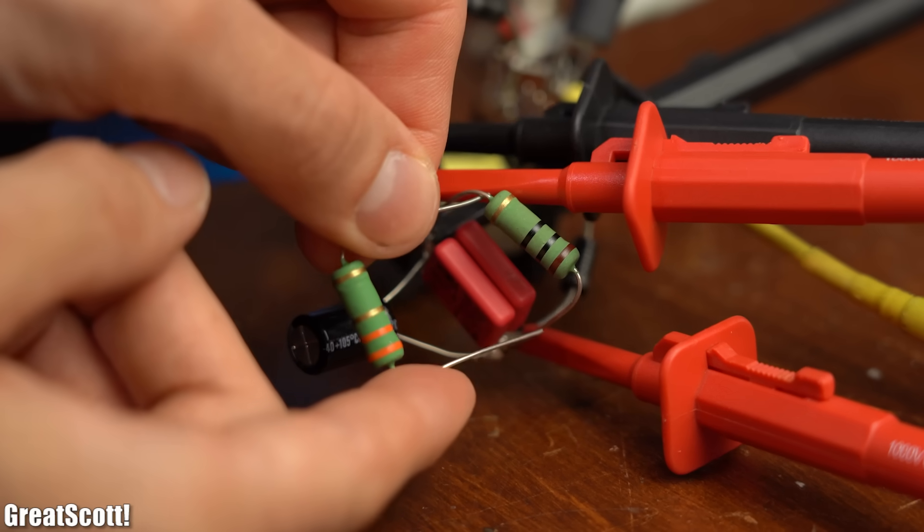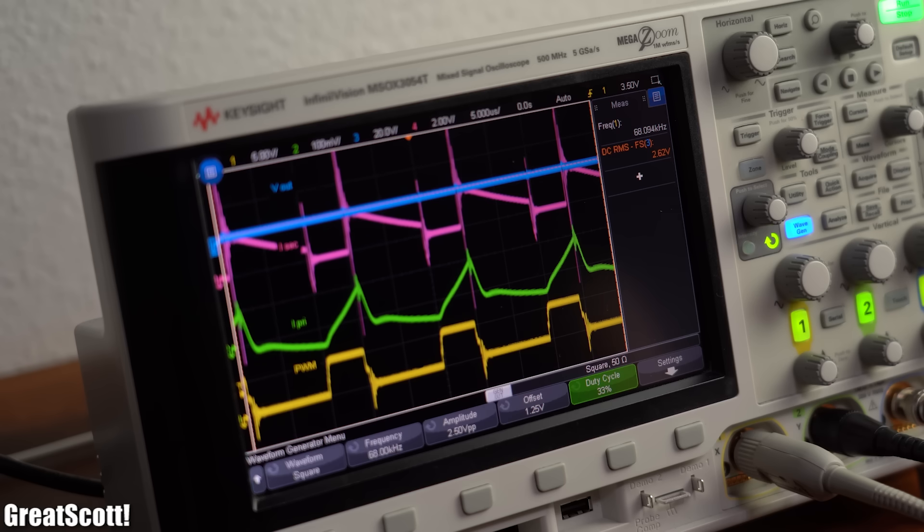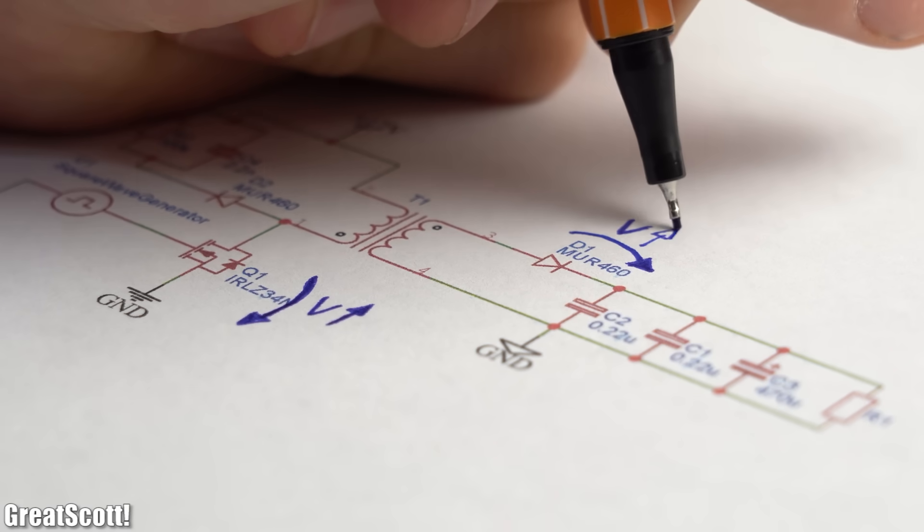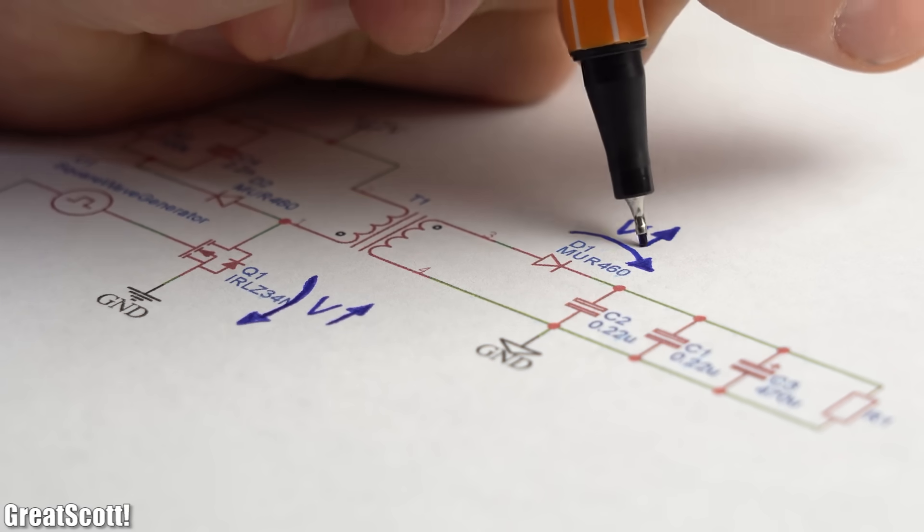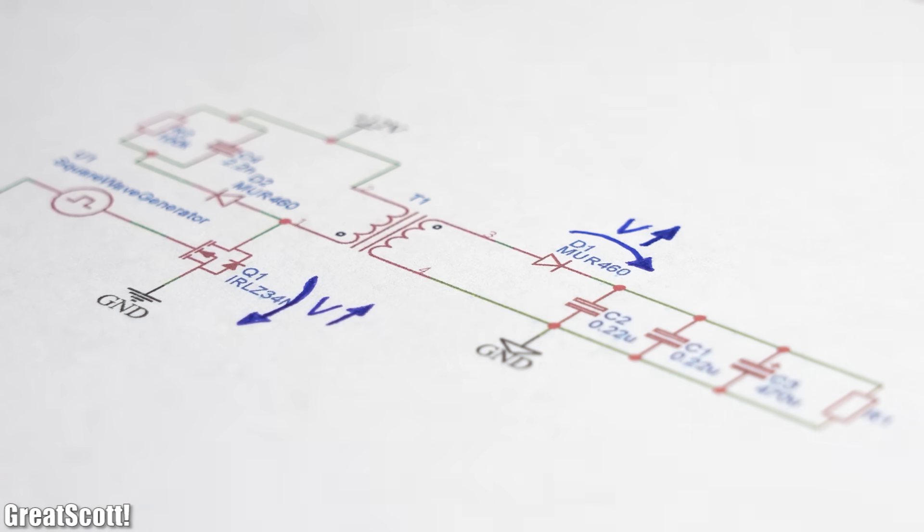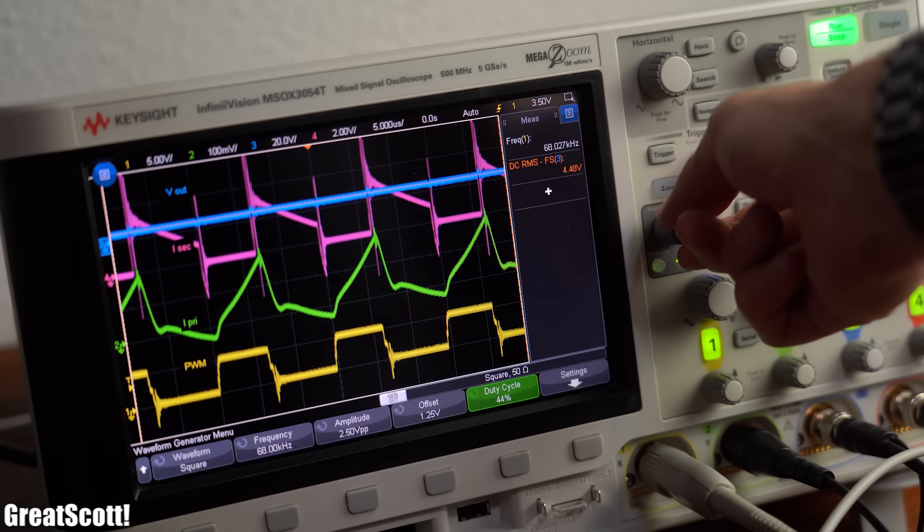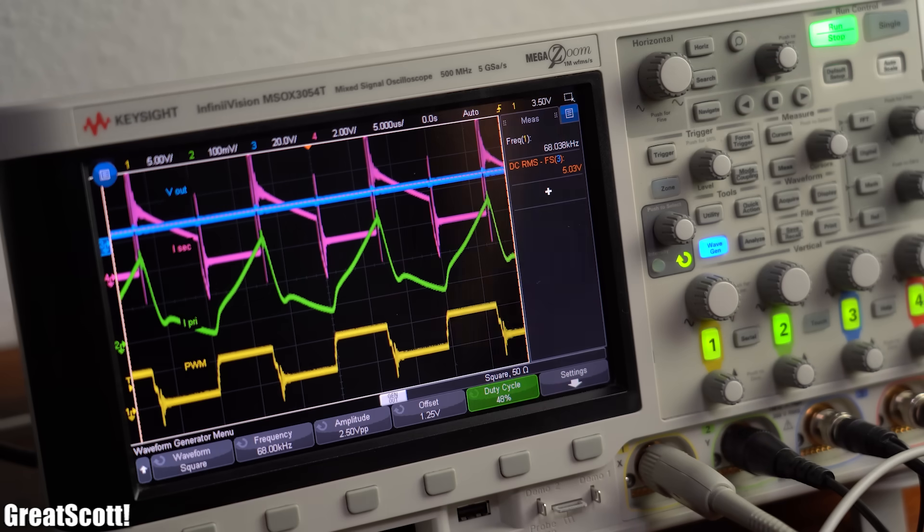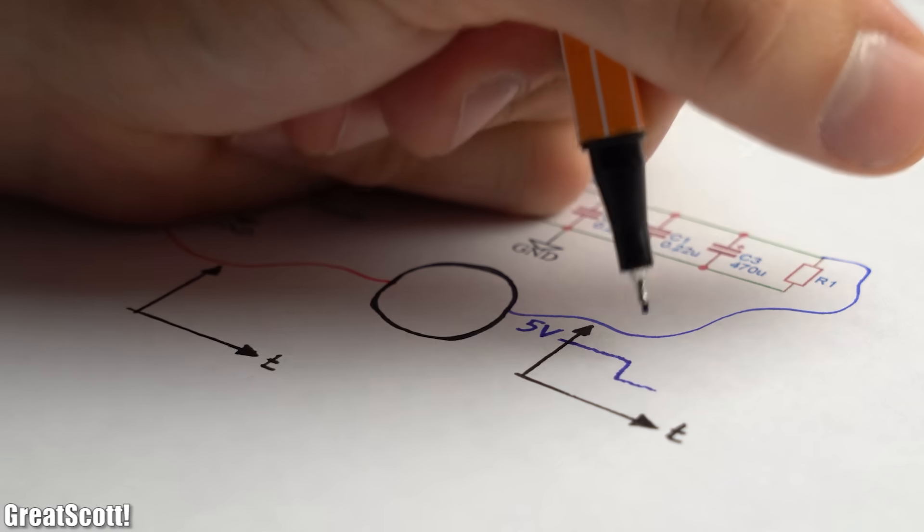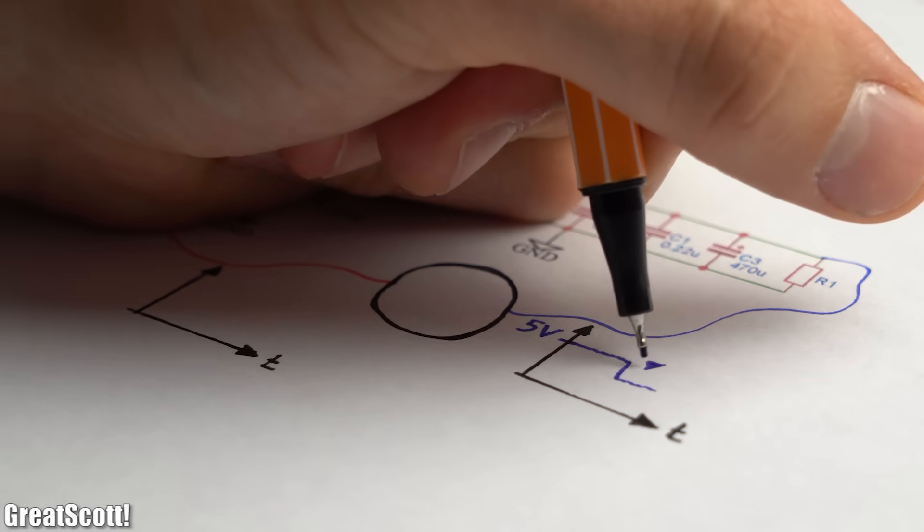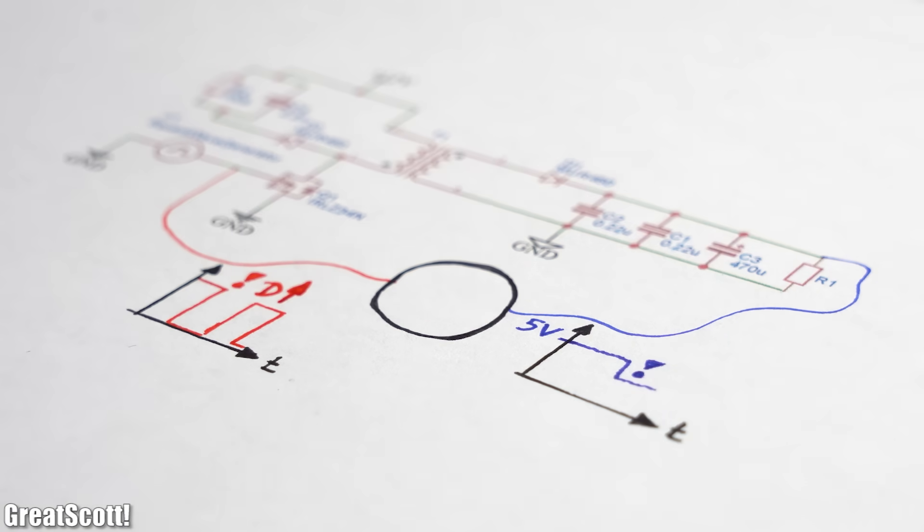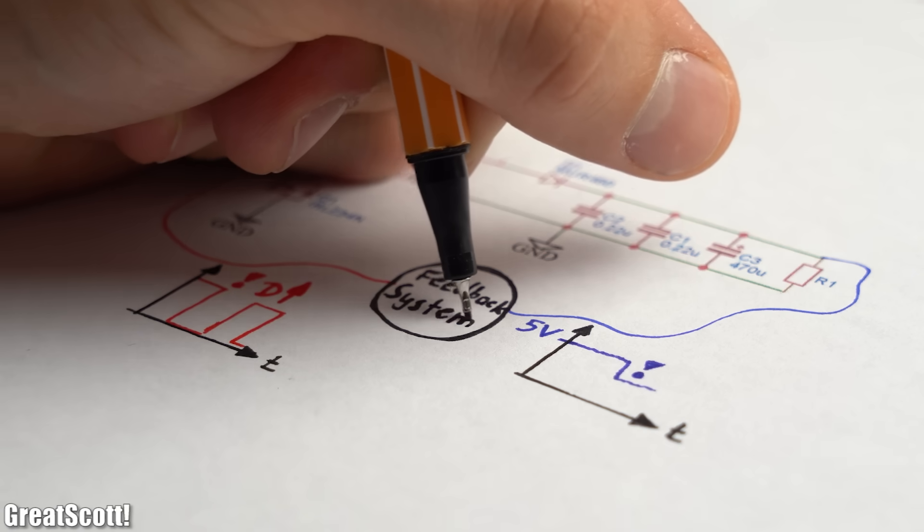This value obviously goes down as soon as we draw more current on the output since we also got higher voltage drops across the resistive elements and diode in this open-loop operation. To compensate for that and transfer more energy, we would have to increase the duty cycle of our square wave control signal. And that basically means we have to constantly monitor the output voltage and according to that either increase or decrease the duty cycle in order to maintain a constant output voltage. Simply put, we need a feedback system.